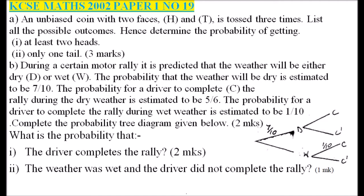Although this was tested as a single question, we are going to separate it into two different parts. The first one requires its own tree diagram involving the coin. Since we are told it is an unbiased coin, the probability of getting a head or a tail is a half. We extend the tree diagram to three branches.